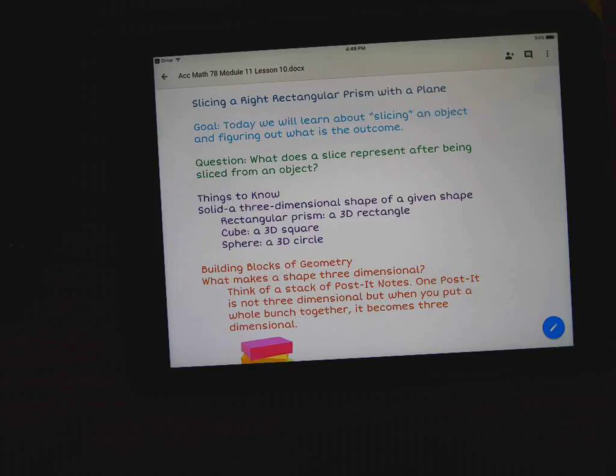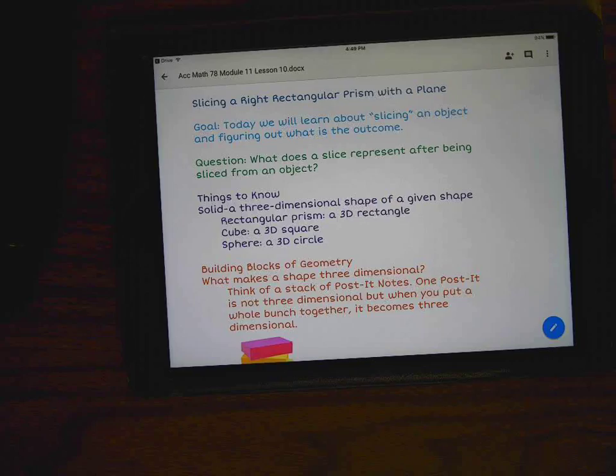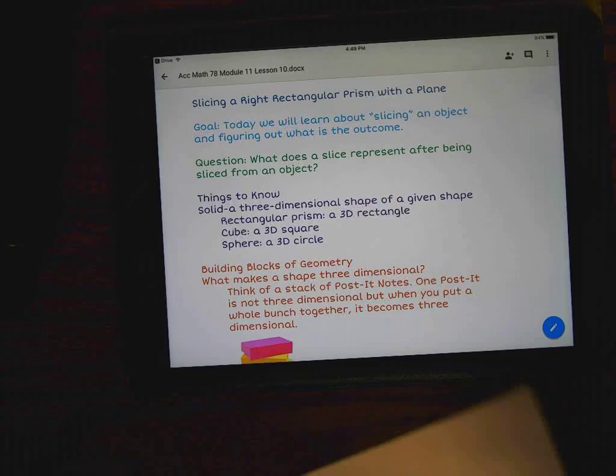A Right Rectangular Prism is usually, an example of this would be like a stick of butter, or another example could be a cereal box, or another example could be the bookshelf that I have in the classroom that has all of our tools on it. If I drew a picture of it, a picture of a Right Rectangular Prism would look something like this.